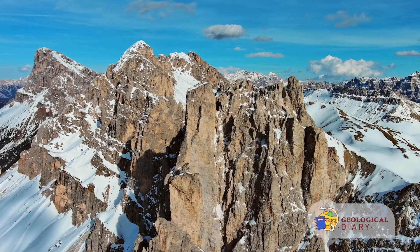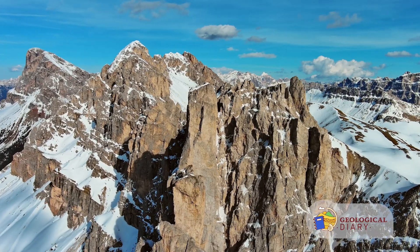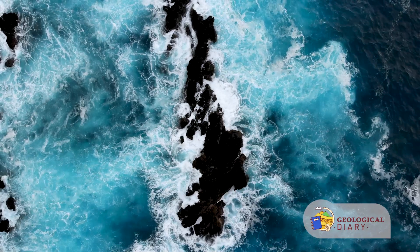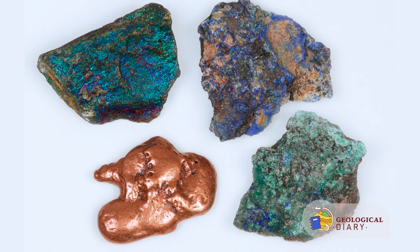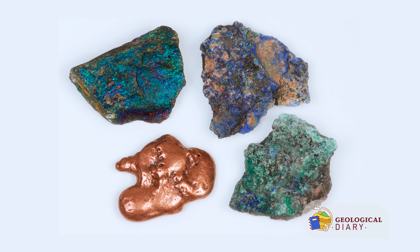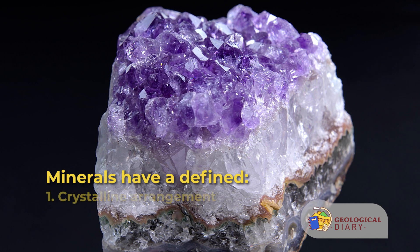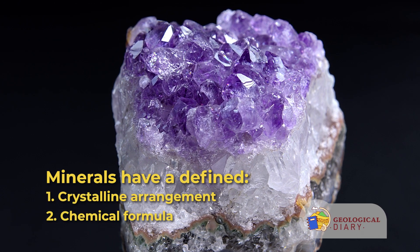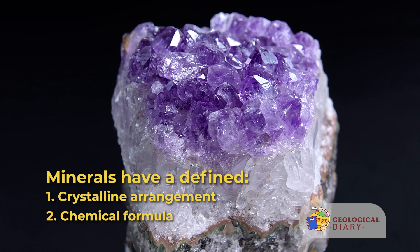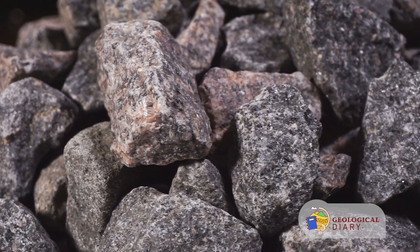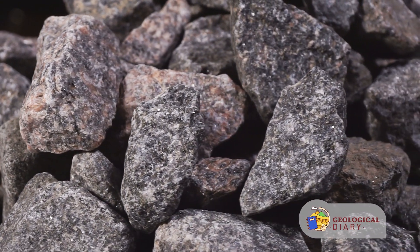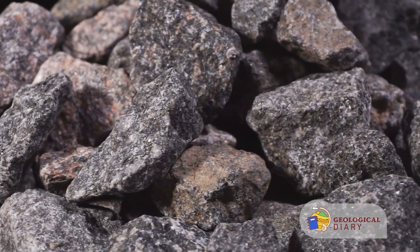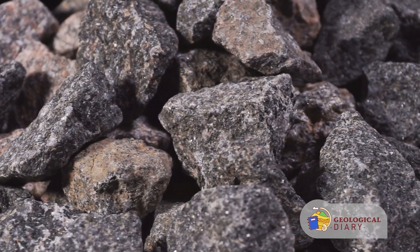The rocks we see around us are a testament of the materials that compose the earth. As we saw in our last video, they are made of different minerals that have a defined crystalline arrangement and defined chemical formula. Because of this, rocks are susceptible to change or to form entirely new rocks depending on their original mineralogical composition. Rocks are susceptible to many transformations in their arrangement, minerals, and textures, and in their formation rocks also exhibit cyclicity.